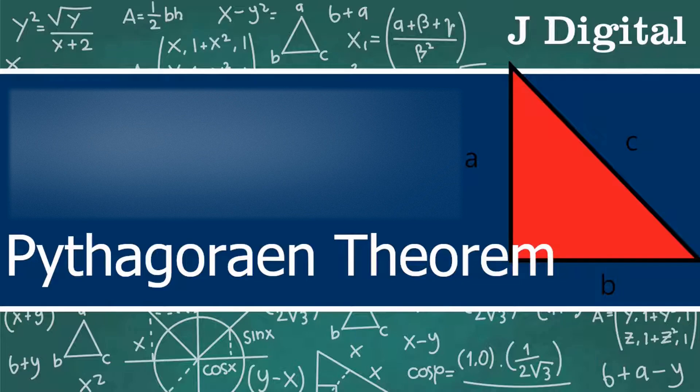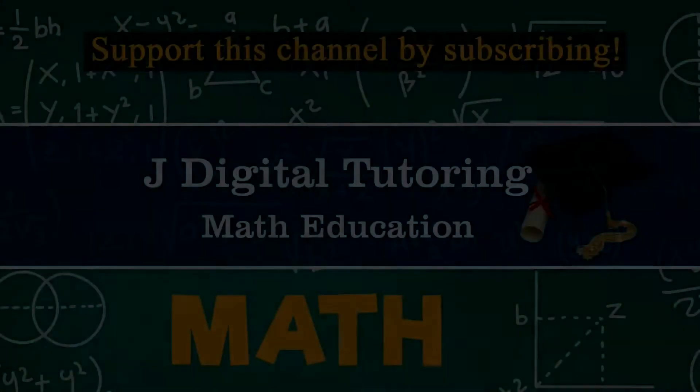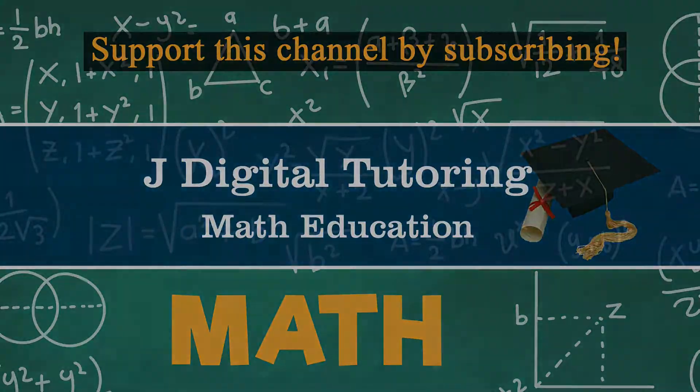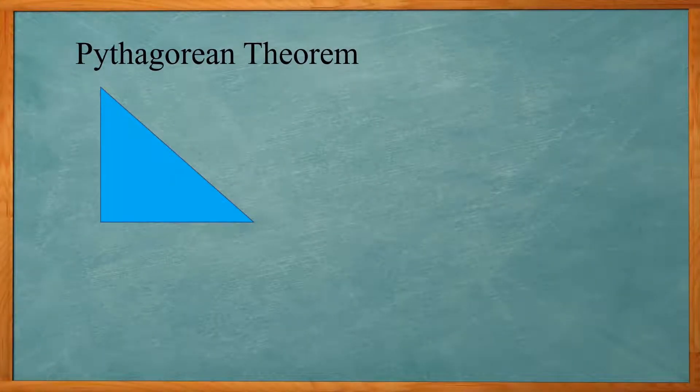In this video I'm going to talk about the Pythagorean theorem: a squared plus b squared equals c squared. This is only true on a right triangle where a and b are legs of the triangle and c is the hypotenuse. Remember the hypotenuse is always the longest side of the triangle.